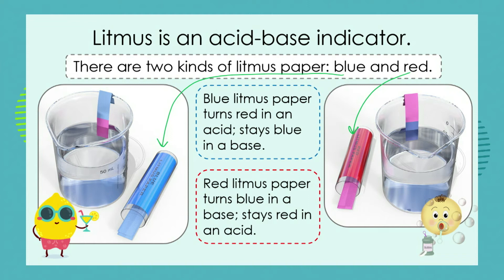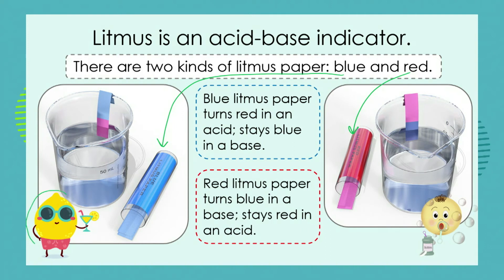What do these two different kinds of chemical indicators do? Remember, they've got to indicate or show us something when put into an acid or a base. If we have an acid and we put blue litmus paper into it, where it touches the acid the litmus paper turns red. But if we put blue litmus into a base, it stays blue. A nice way to remember: B for blue, B for base.